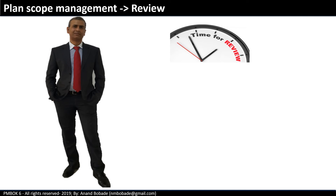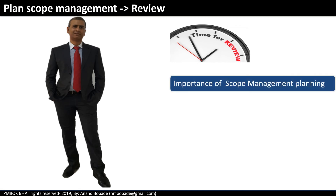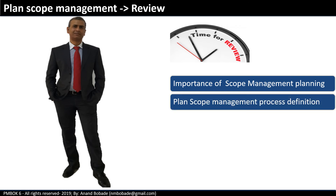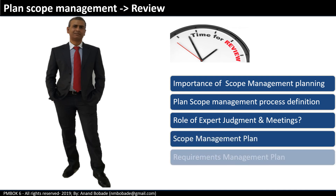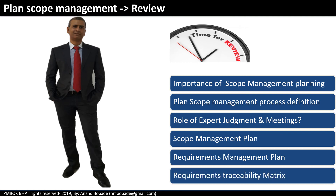We have completed the plan scope management process. In this session we learned the importance of scope management planning, went through the process definition, understood the role of expert judgment and meetings, and discussed the contents of the scope management plan and the requirements management plan. Finally, we learned about the importance of the requirements traceability matrix. See you in the next session — collect requirements process.